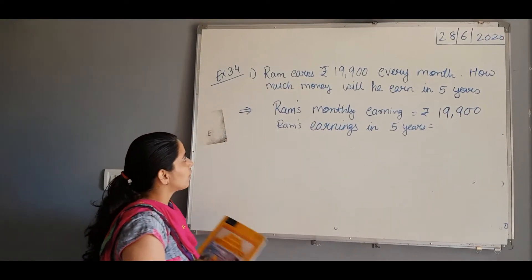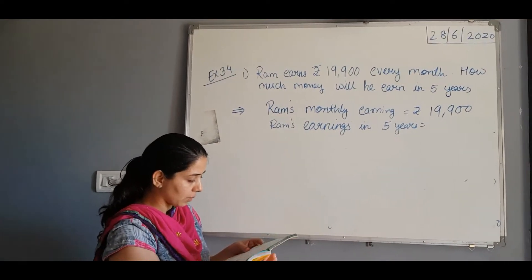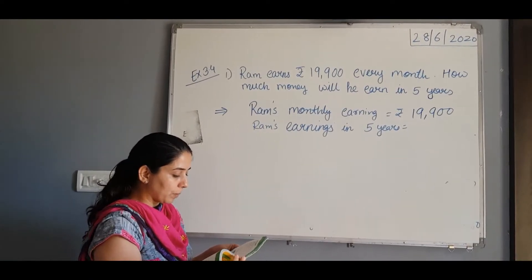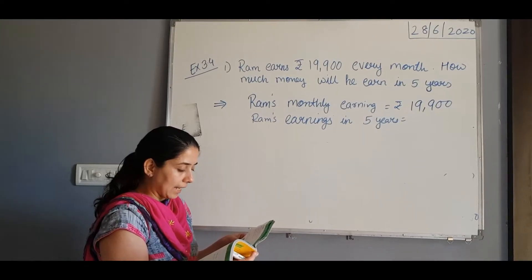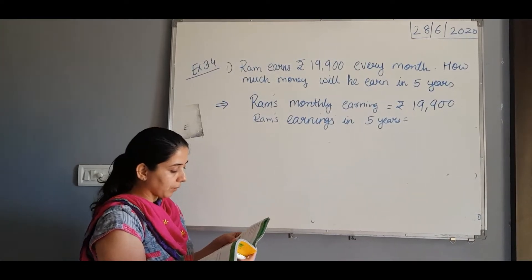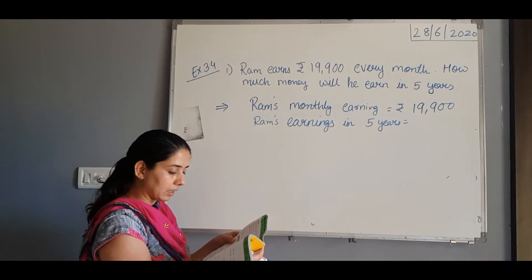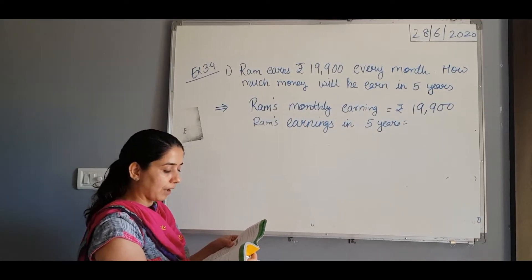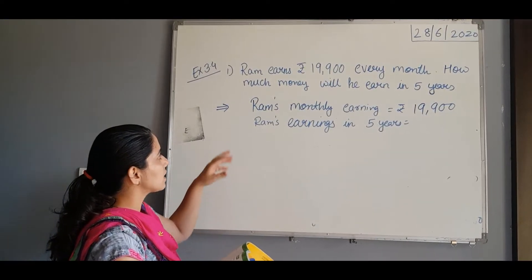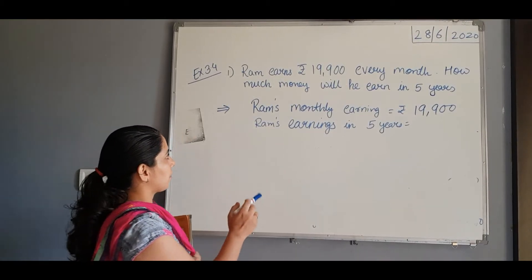So the first sum of exercise 3.4: Ram earns rupees 19,900 every month. How much money will he earn in 5 years? First of all we will write what is given in the statement — that is, we will frame the statement.